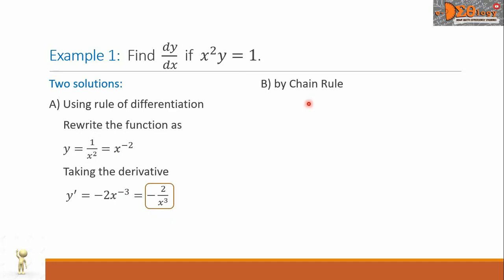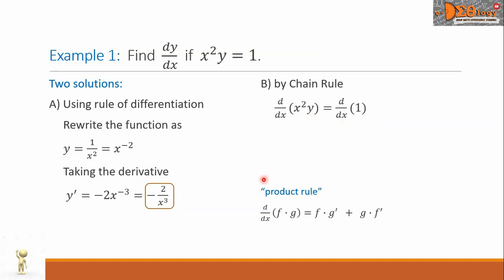Solution B is by chain rule. Here we're going to take the derivative of both sides of the equation. So we have d over dx of x squared y equals d over dx of 1. Notice that on the left side, we have two functions — in fact, a product of two functions. The first function is x squared, and the second function is y. So let us write the product rule: d over dx of f times g equals f times g prime plus g times f prime.